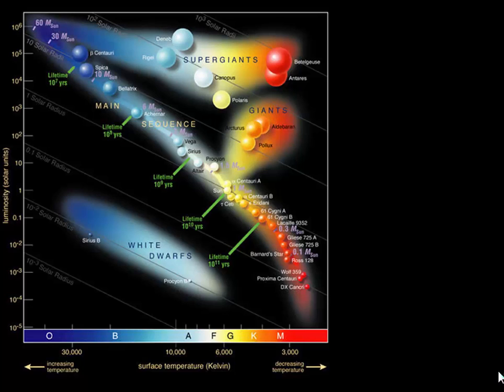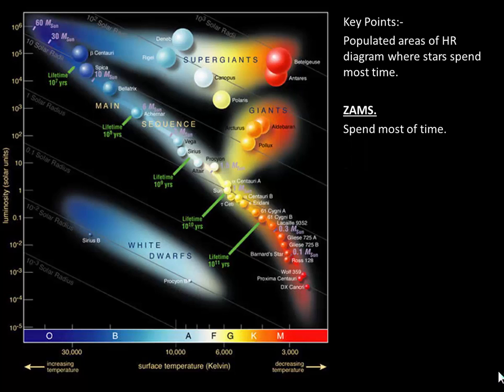The key points: the most populated areas of the HR diagram are where the stars spend most of their time. What's called the zero age main sequence is where the stars spend 99% of their lives. Then they move off the main sequence when the hydrogen starts to get depleted.